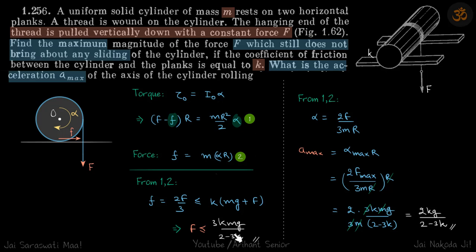Now again using the same two equations, we can get the value of α. Because we need to talk about the acceleration now. So let's get the value of acceleration. From equations 1 and 2, α = 2F/(3mR).